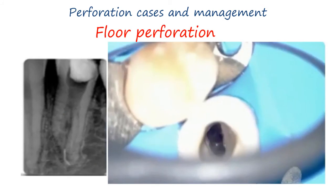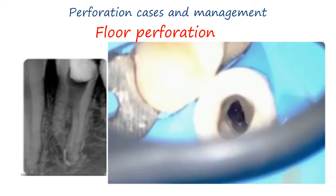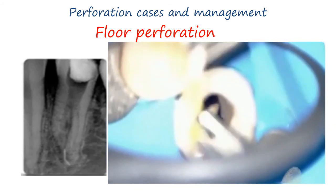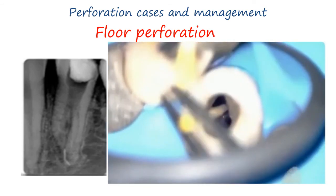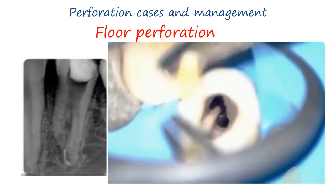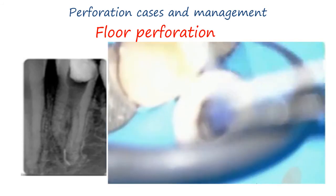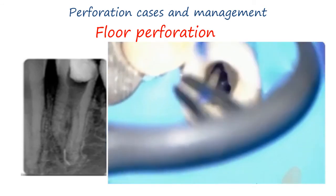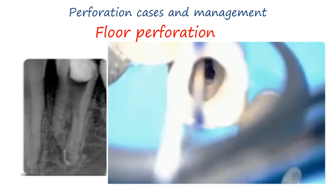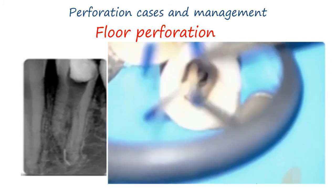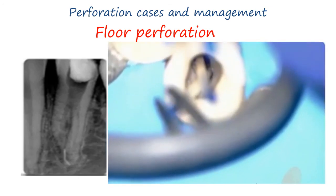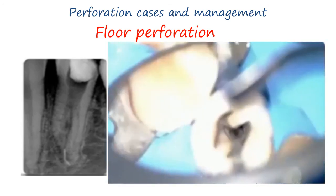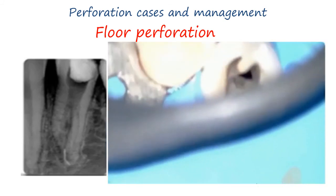This is a case of floor perforation in a two-rooted mandibular premolar. We have two options: first, protect the canals with either Teflon or paper point during application of MTA to the perforation site; or second, protect the perforation site with Teflon during obturation of the two canals. Now protect the two canals using paper point, then confirm you have good access to the perforation site to apply the repair material.